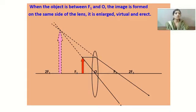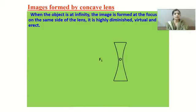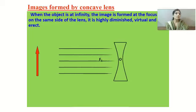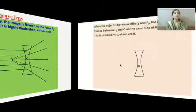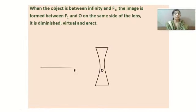Next, images formed by a concave lens. When the object is placed at infinite distance, the rays of light appear to come parallel to each other. After refraction these rays diverge but appear as if coming from the focus on the principal axis. The image formed is highly diminished, virtual, and erect.